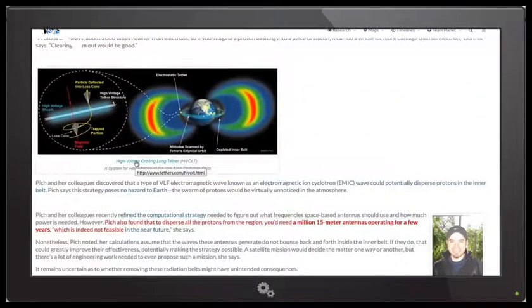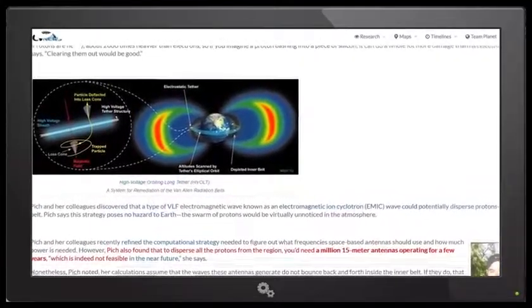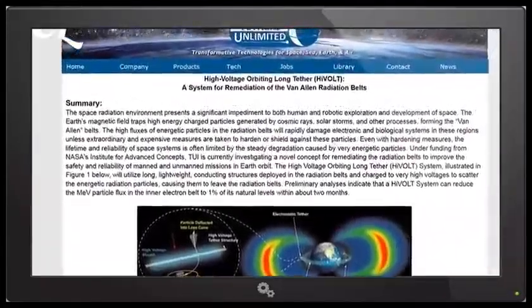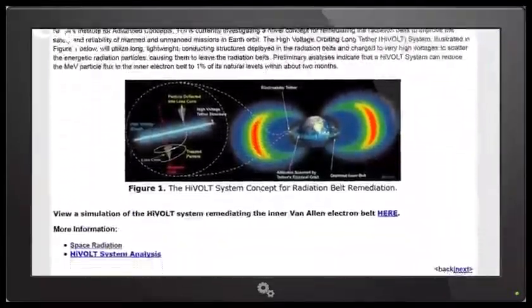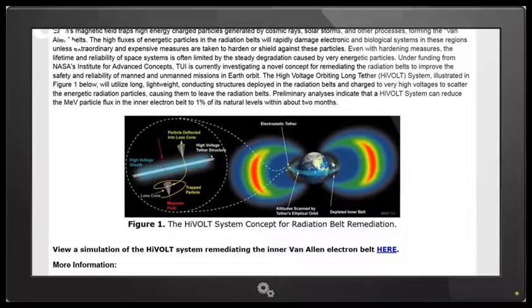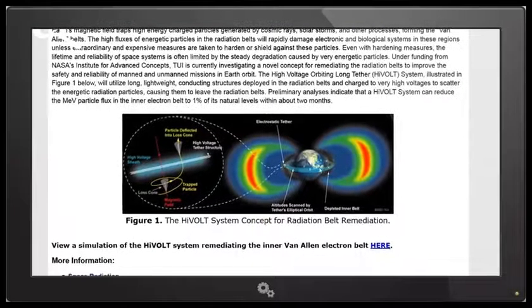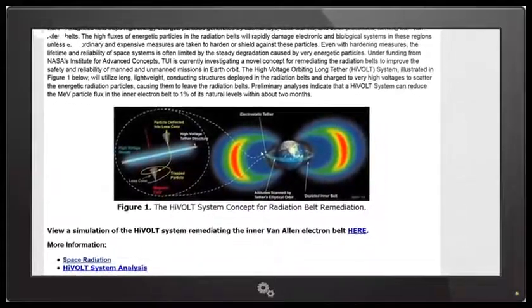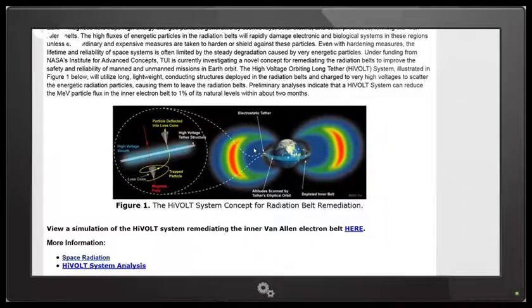Here's your high voltage orbiting long tether. And that is over on tethers.com/highvolt. And you can see the picture there. And then what you can see is they plan on putting tethers all along the equator right there. And that would cause the radiation in space to slowly just rain out.